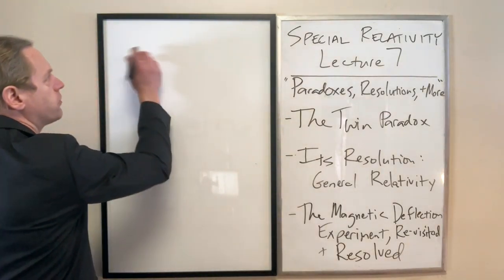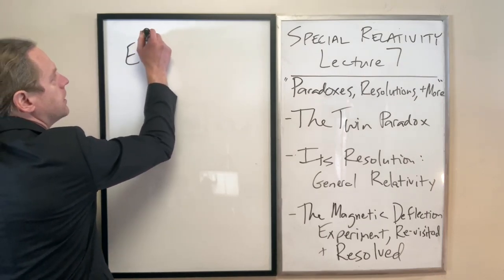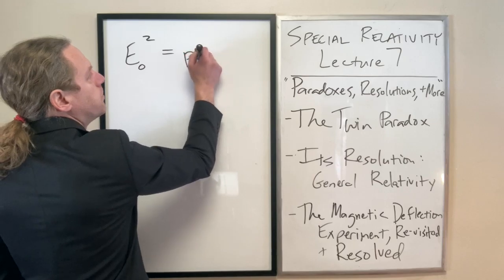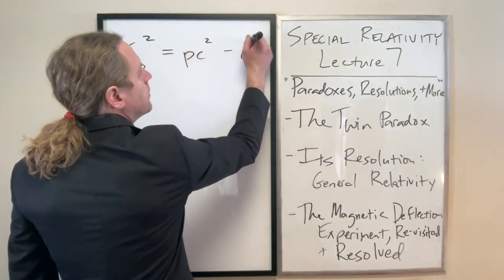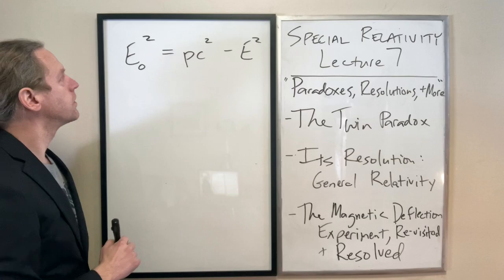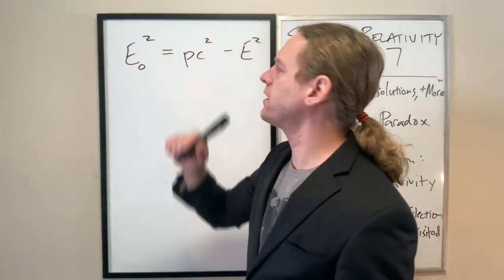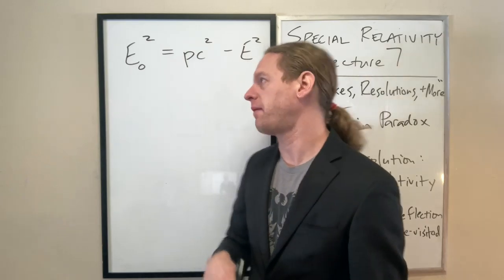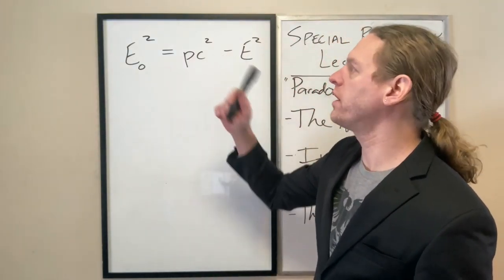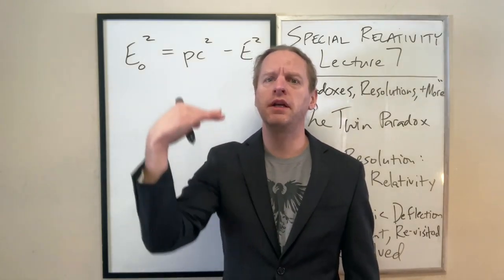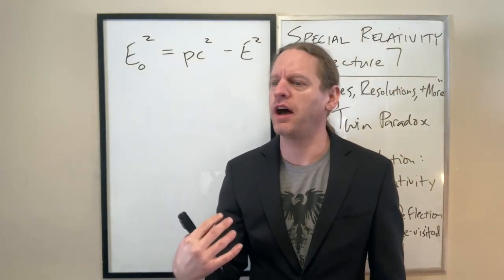We developed an equation that said E naught squared equals PC squared minus E squared. Now, one correction I did need to make, and by the way, check that to make sure that's consistent with what I'd said, but I'm always positive it was. But one correction I needed to make, I mentioned last time that there's kind of two competing conventions in relativity.